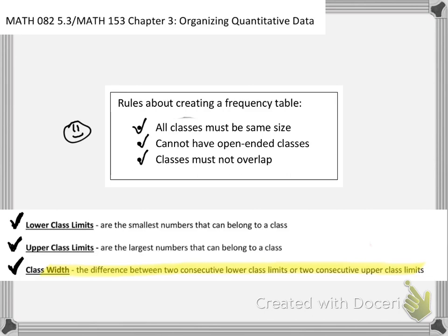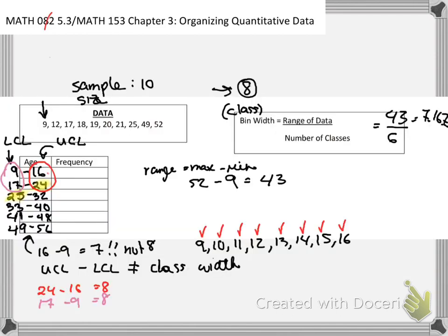And realize, if we abided by this rule, if we made all of our classes the same size, then it does not matter which two consecutive numbers that I choose. So for example, I could come all the way down here to 48 and 40, and I still should find a class width of 8. All right, let's move on.